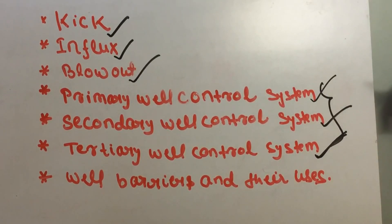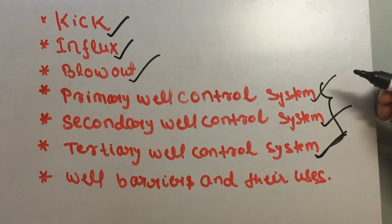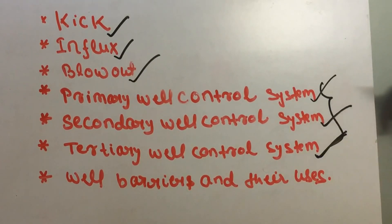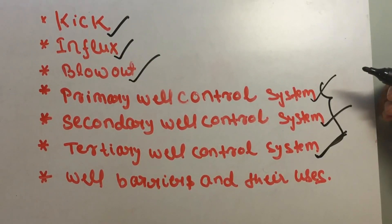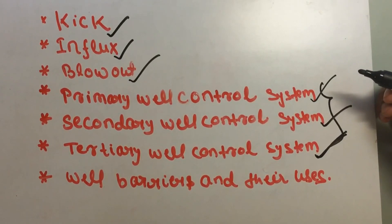Well barriers are also used to shut in the well by direct command during an emergency shutdown situation, preventing hydrocarbons from flowing from the well.